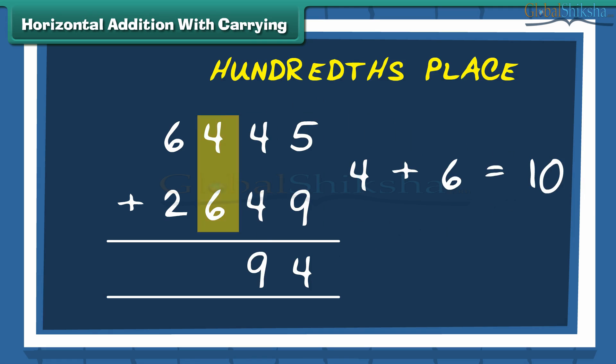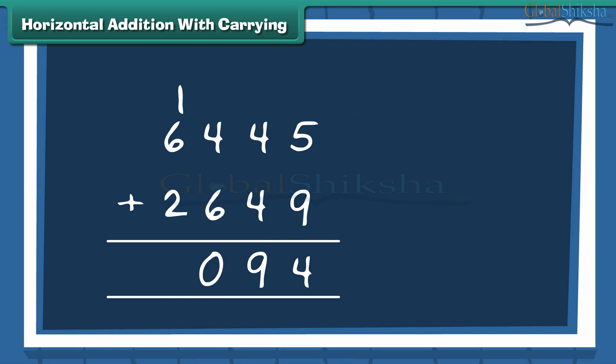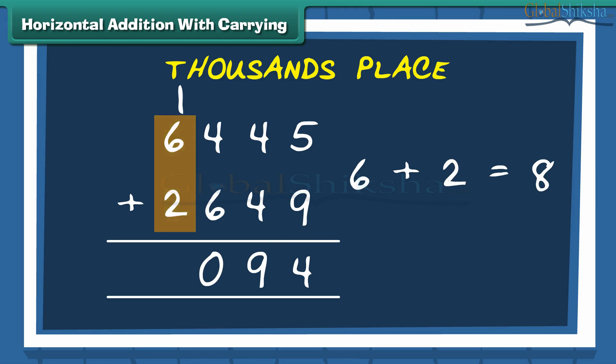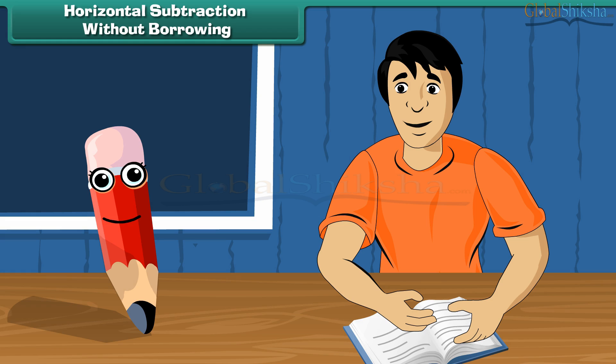Let us practice one more example with a bit of a twist. We have 2 numbers, 6445 and 2649. Add the numbers at 1's place. Now carry 1 to the 10's place. Add the 10's.